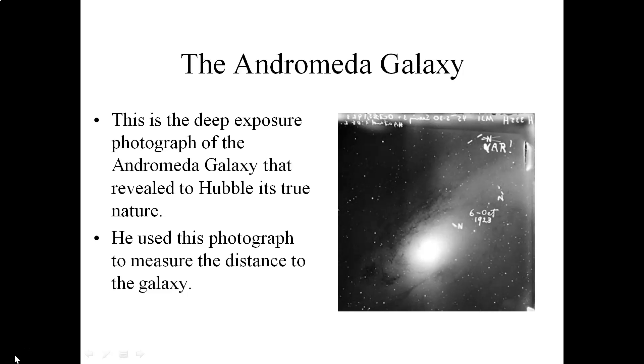So using the Hooker Telescope, which is once again the most powerful telescope in the world at the time, Hubble took deep exposure photographs of that nebula. This right here is one of the key photographs that he took. He was able to resolve individual stars in the Andromeda Nebula. And then right here it's highlighted as you can see with his handwriting. He identified a specific type of star within this nebula called a Cepheid variable.